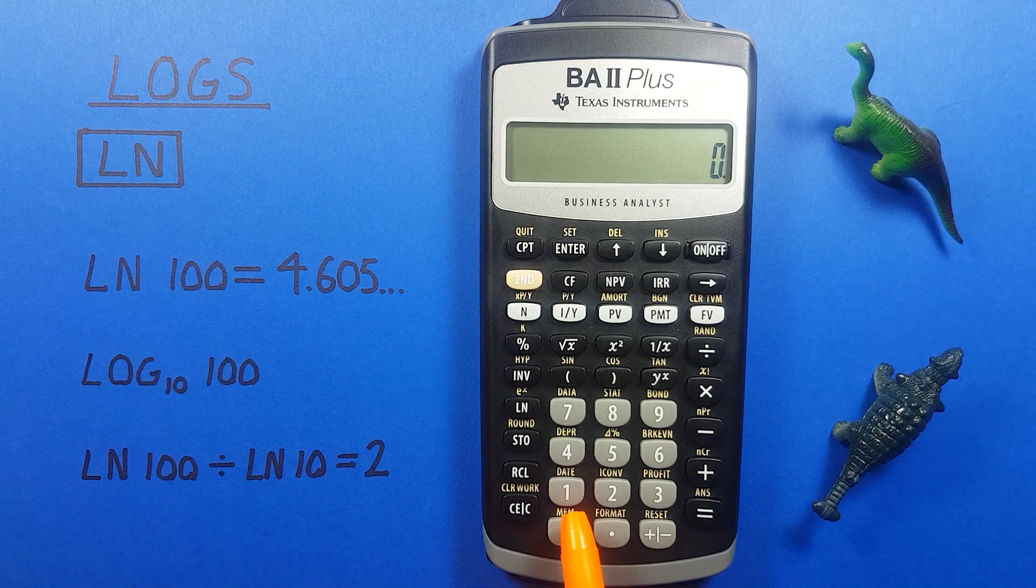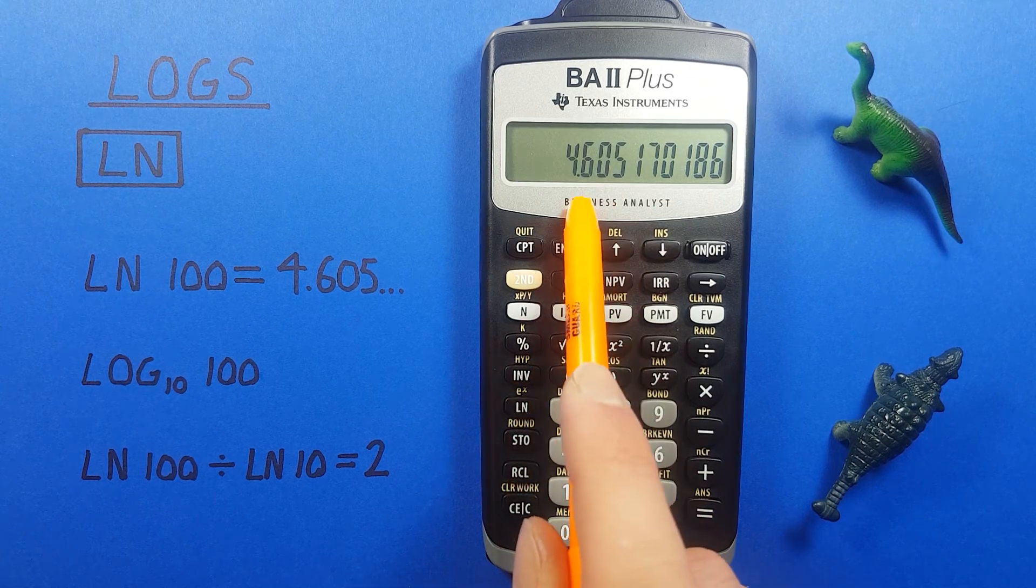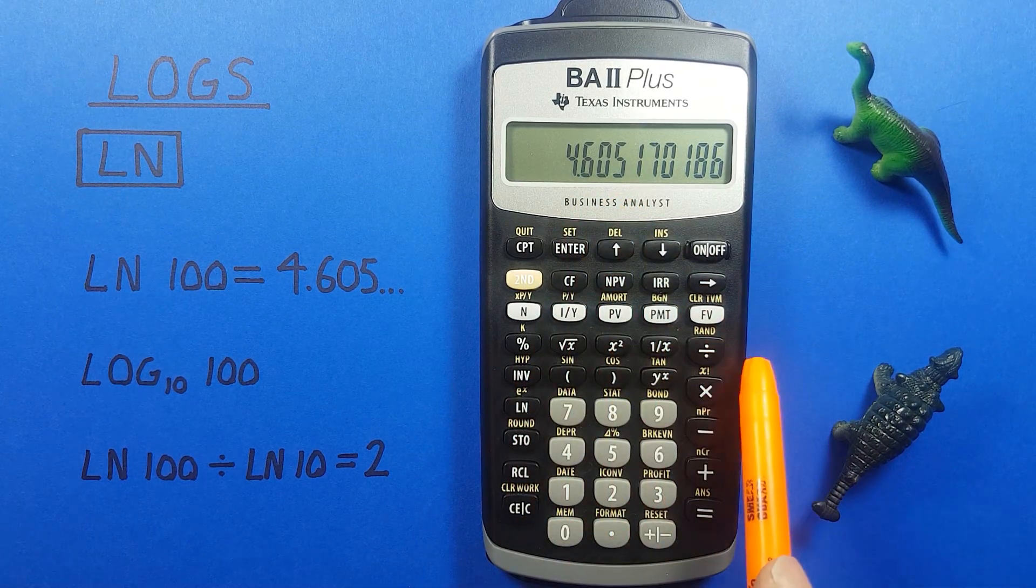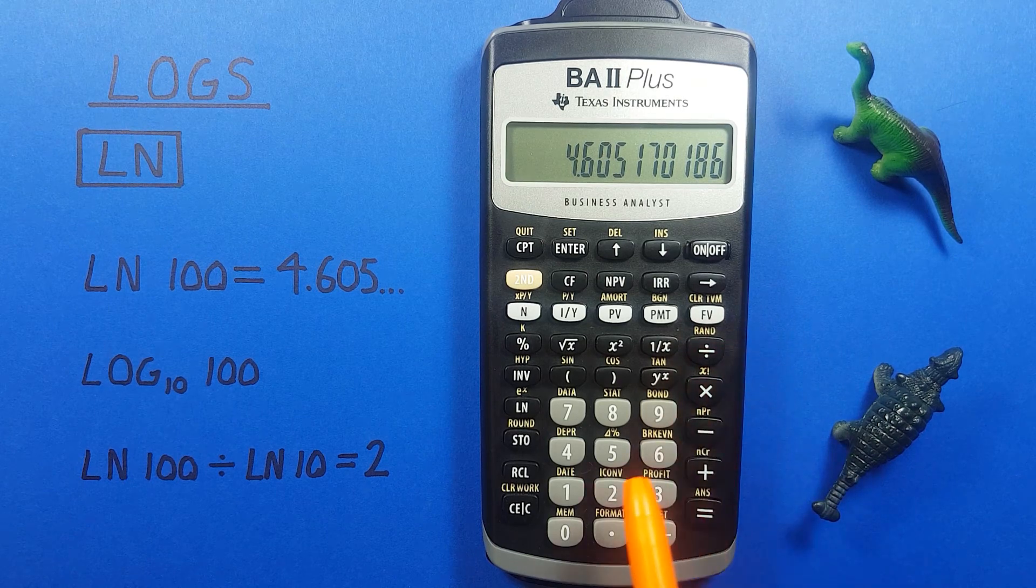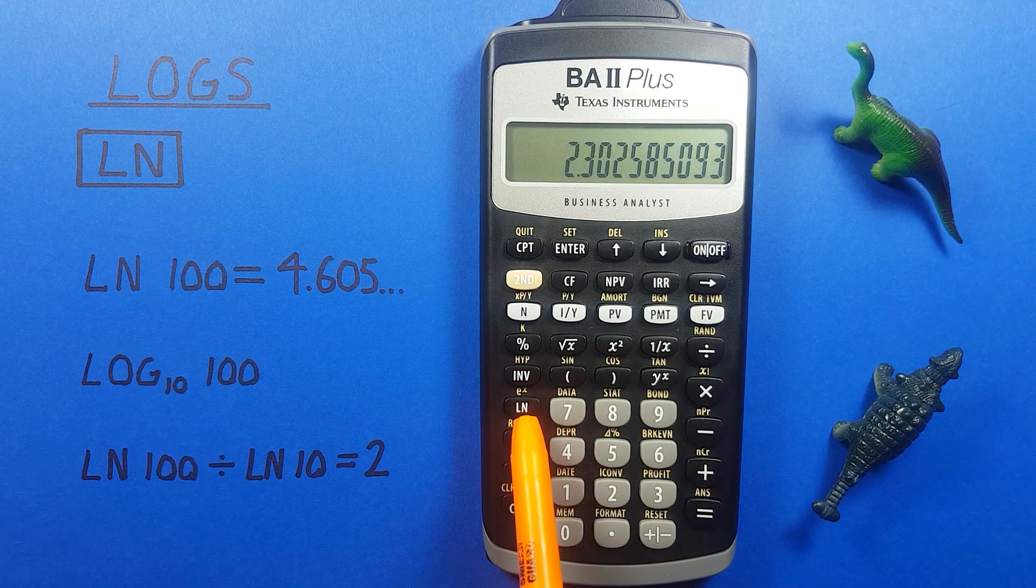Let's go through an example here. So we'll place 100 on the screen, press LN. There we go. That was our natural log of 100. And then divide that by 10 and hit LN again for the natural log of 10.